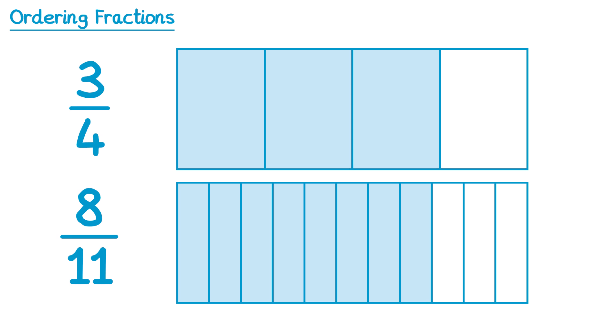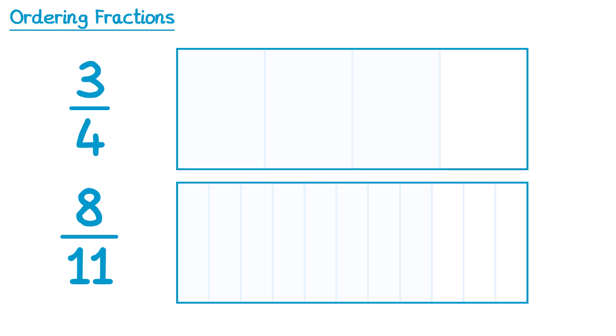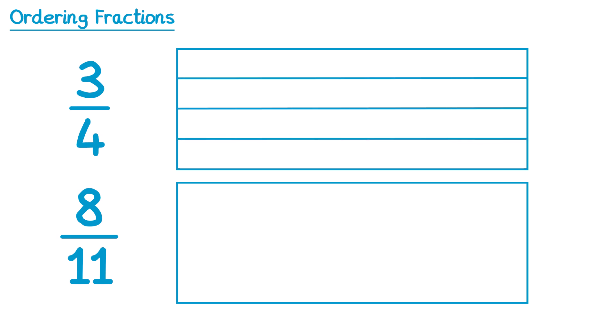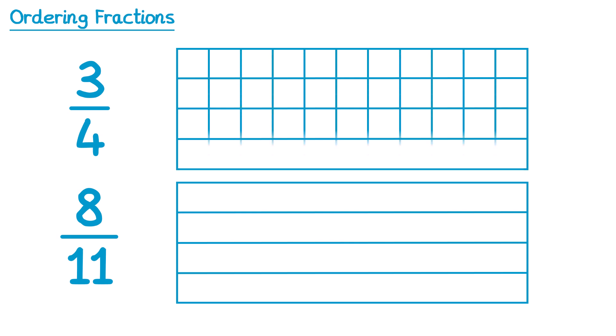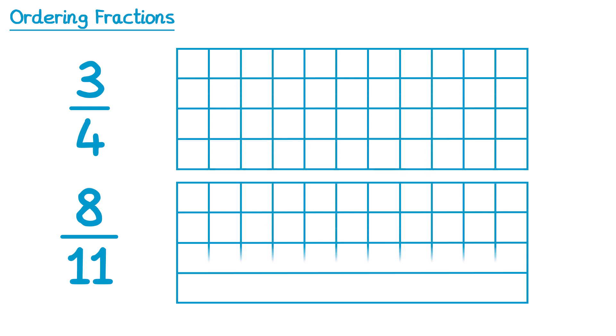This isn't necessarily the best way to approach a question like this though. Let's have a look at another way. We're going to split both of the bars into quarters using horizontal lines, and also into elevenths using vertical lines.